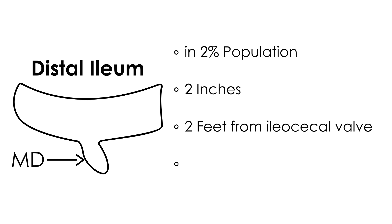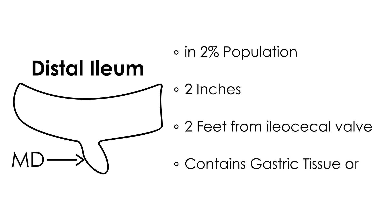The key thing about Meckel's diverticulum is that it actually contains ectopic tissue, such as gastric tissue or pancreatic tissue. That is the basis for a diagnostic study that will be discussed later.